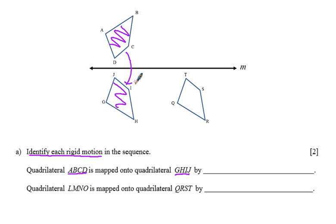And it looks like a reflection across line M will do the job. So I just have room to write a reflection. More precisely, it's a reflection across line M.